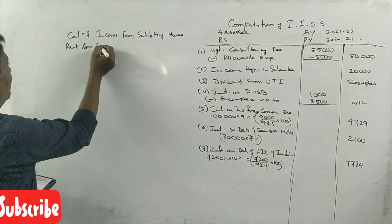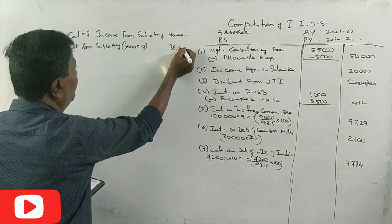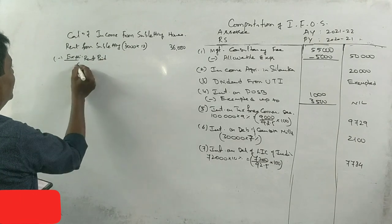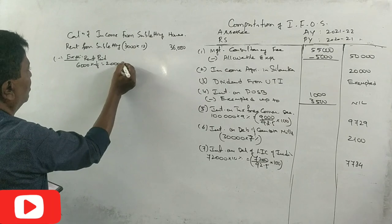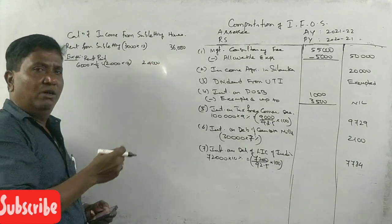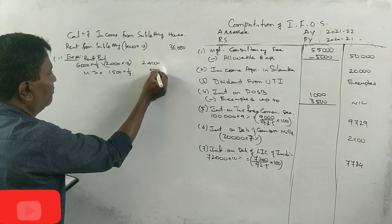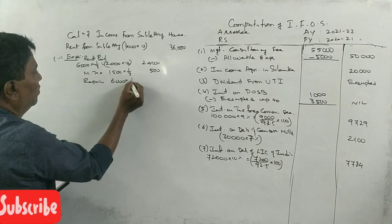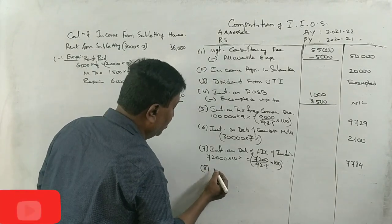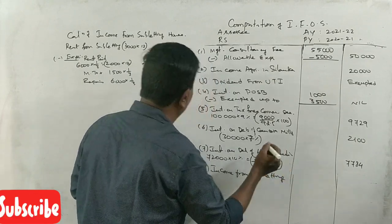Rent from subletting, 3,000 into 12, 36,000. What should we do to rent paid? Expenses. What should we do to rent paid? 6,000 for full money. 2,000. 1,500. What should we do to rent? That's 1,300. That's why they are renting. 2,500. The rent is the rent. 1,500. So 2,400. Income from subletting is 9,500 rupees.